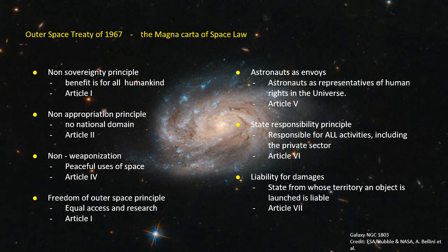The second principle is non-appropriation, which states that outer space, including the Moon and other celestial bodies, is not subject to national appropriation by claim of sovereignty, by means of use or occupation, or by any other means. This principle, used during the New World conquest in the 16th and 17th century, was agreed by countries not to be applied in space.